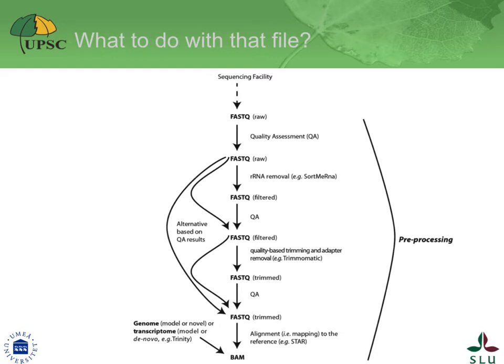The FastQ file delivered to us by the sequencing facility is the raw data. Before we can use that data in our research, we need to make sure that it is of sufficient quality. If we observe technical artifacts, we need to take action to remove these. When we manipulate the data to remove artifacts, we need to be cautious and ensure that we do not bias the data. Hence, for every step where the data is manipulated, we need to reassess its quality.